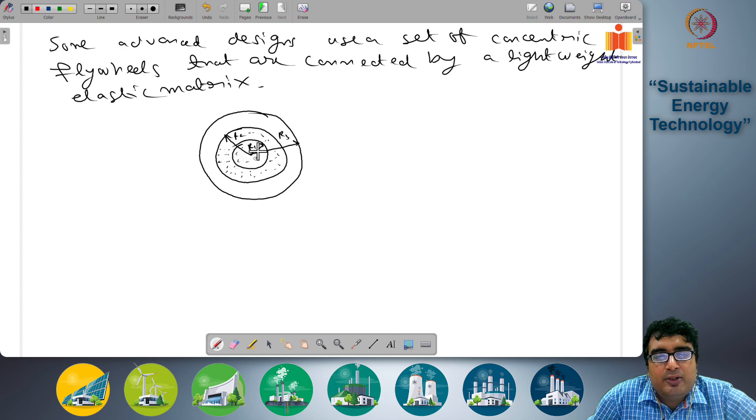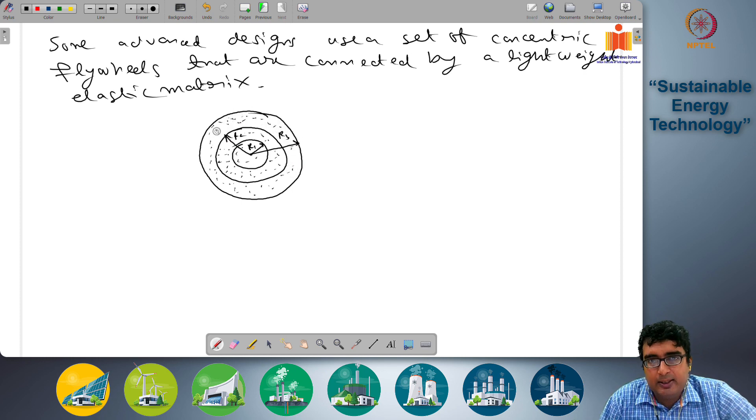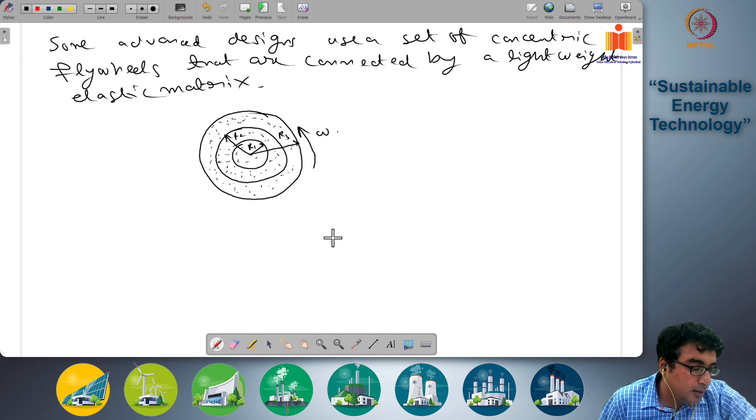This material has extremely lightweight and does not therefore contribute significantly to the total flywheel weight. The majority of the flywheel weight is concentrated on this heavy rim material. And in between, you have this lightweight elastic matrix that is holding this entire flywheel system together. And all of this together are rotating at a radial velocity of omega. That is another design, we can show an example of an advanced flywheel system.